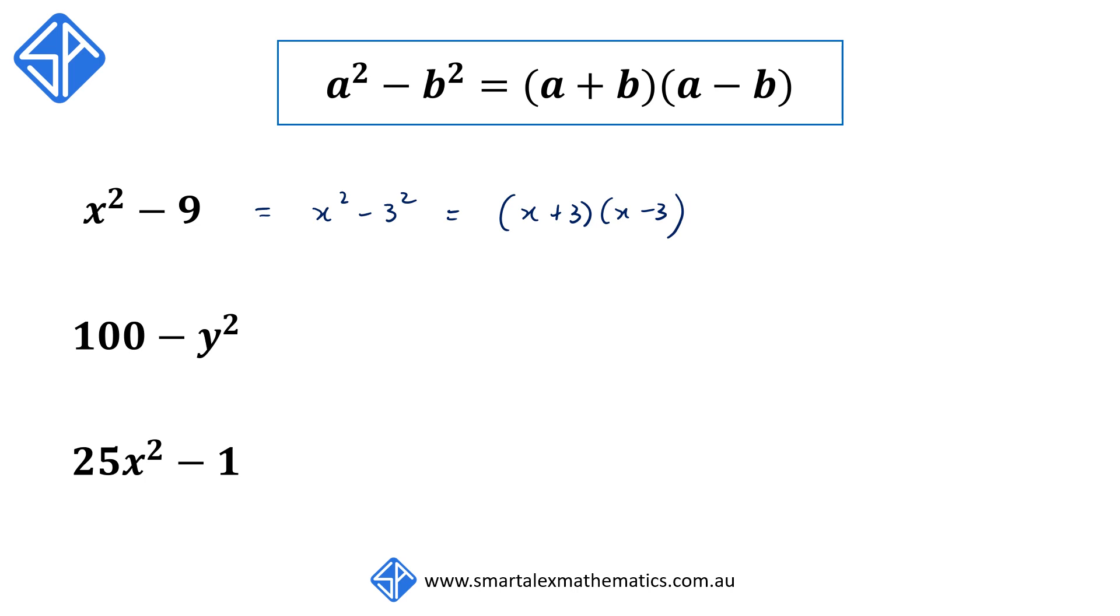Our second example, 100 - y², can be written as 10² - y², so this would factorize to (10 + y)(10 - y). Just note here, the order of the second factor, 10 - y, is important because 10 - y isn't the same as y - 10.